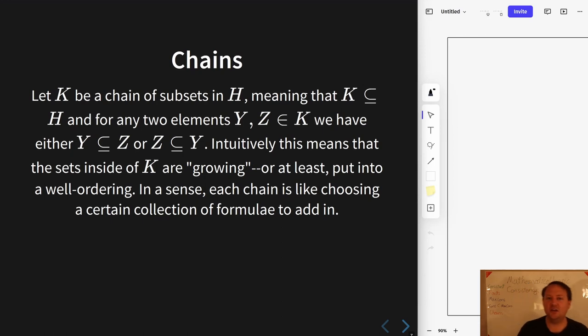So there's this generalization of this notion of a chain, which we often use in set theory. And this is what Zorn's Lemma talks about, but let's just say what it is. We define a chain of subsets. K is a chain.